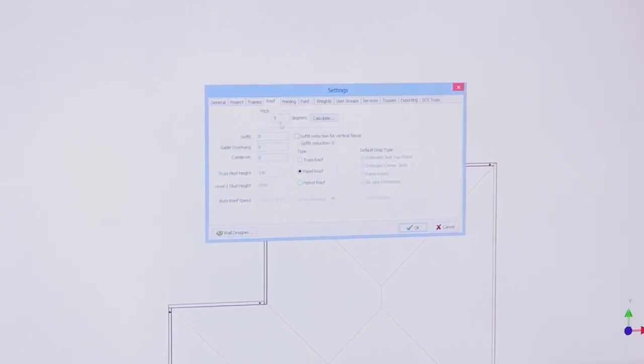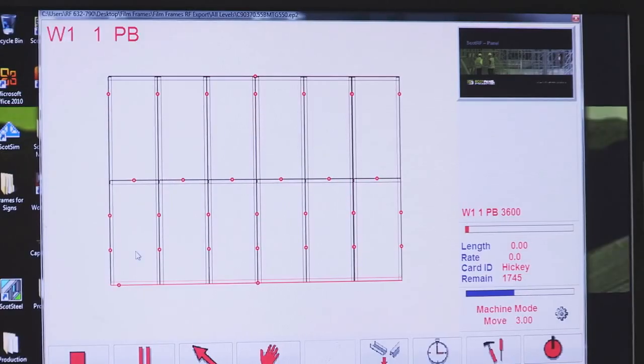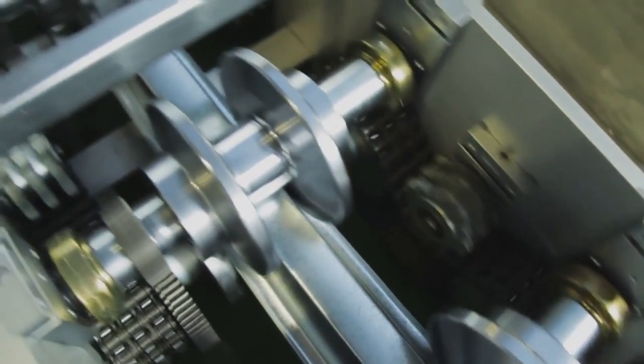Structures are designed and engineered in the Scottsdale software which is then exported to the roll former. The roll former then produces the design.